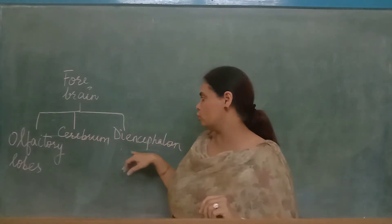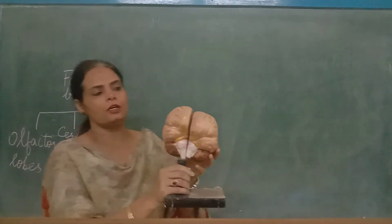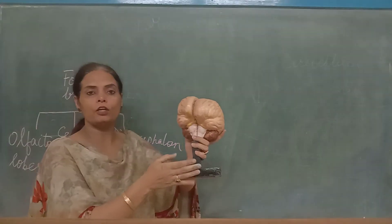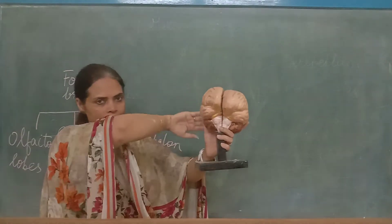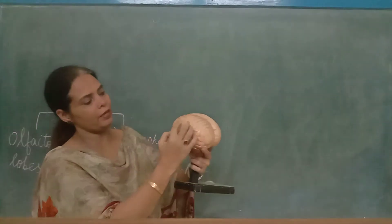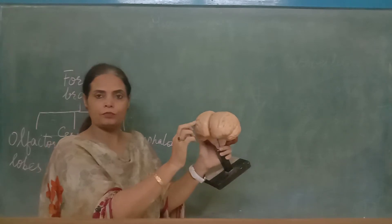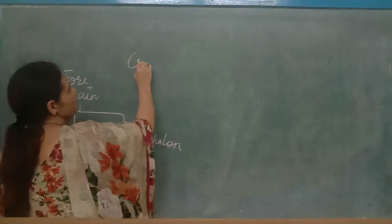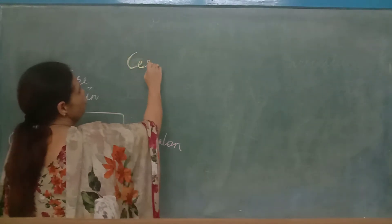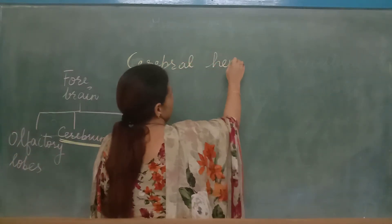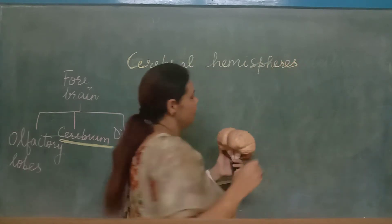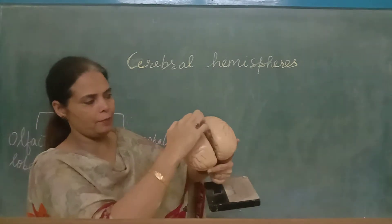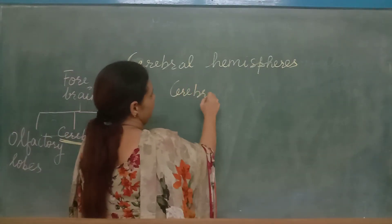Let us now see the cerebrum, olfactory lobes, and diencephalon. This is the model of the brain — from the front it looks like this. This is your forebrain, the midbrain is in the center, and the hindbrain is at the back. The pinkish area you see is all part of the cerebrum. The cerebrum is divided into two hemispheres called the cerebral hemispheres.